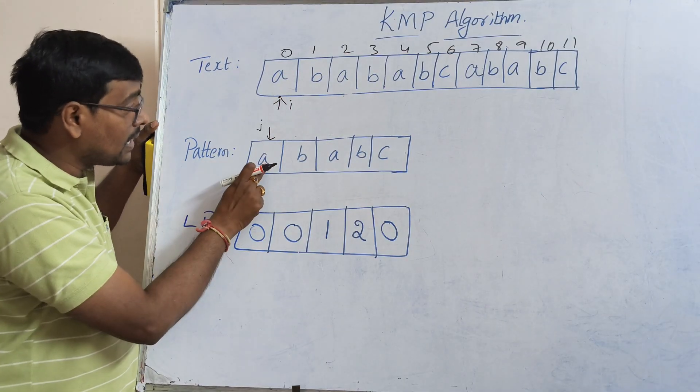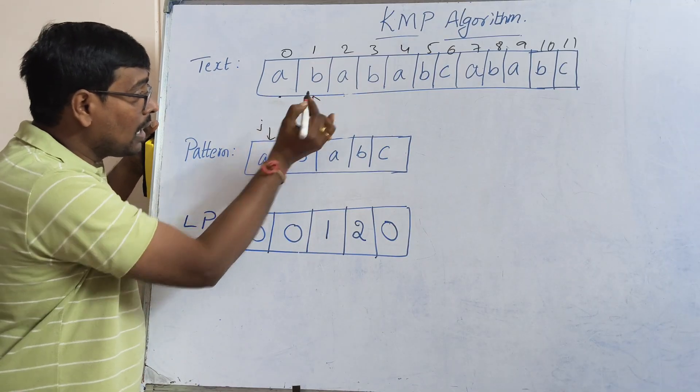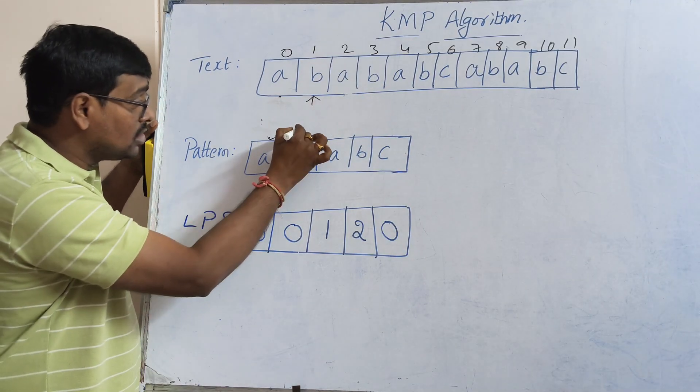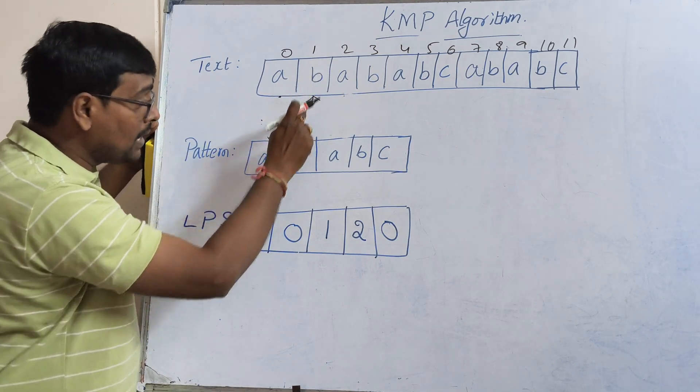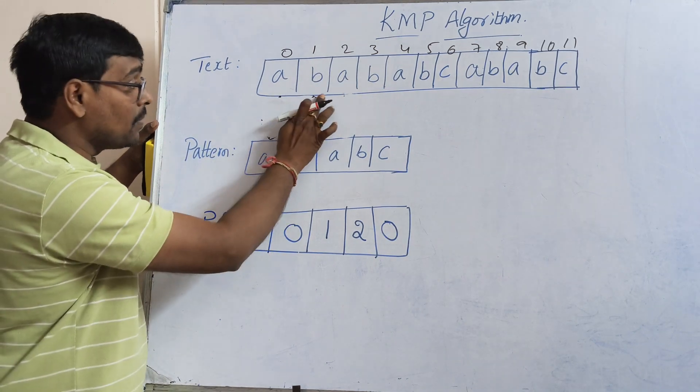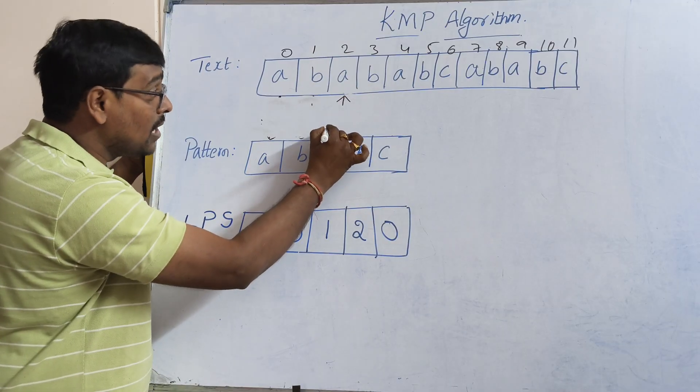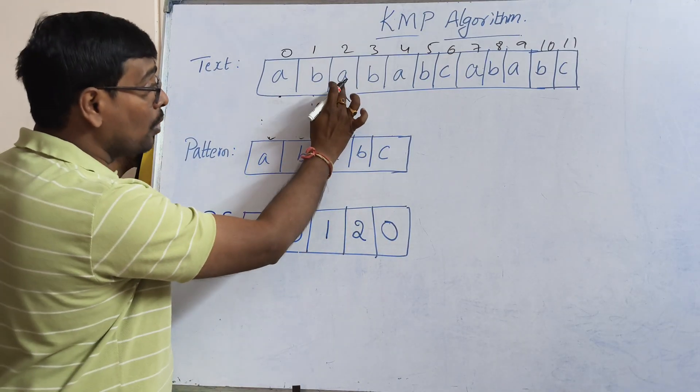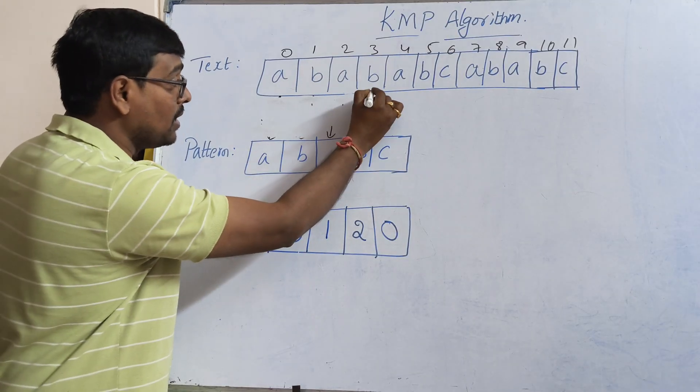That is 'a' and 'a' - both are equal. If both are equal, I am moving to the next one. 'j' moves here. In the next step, 'b' and 'b' are the same. If there is a match, increment the pointer.